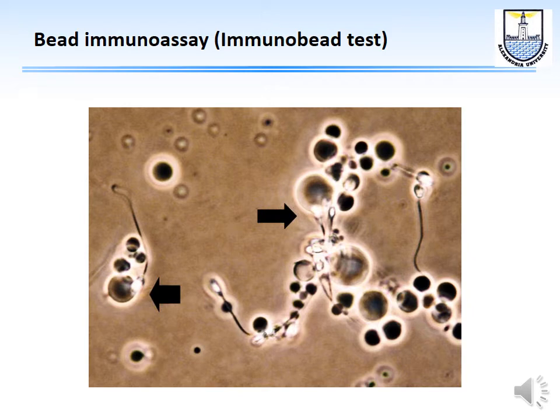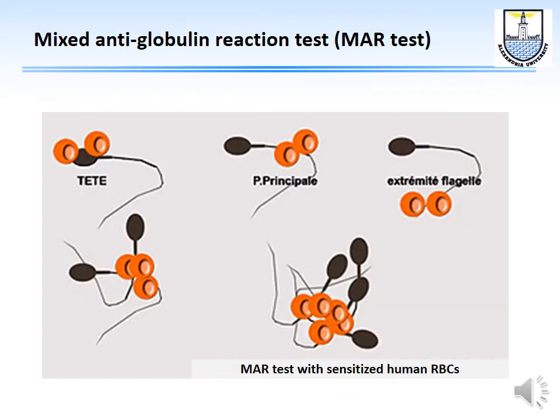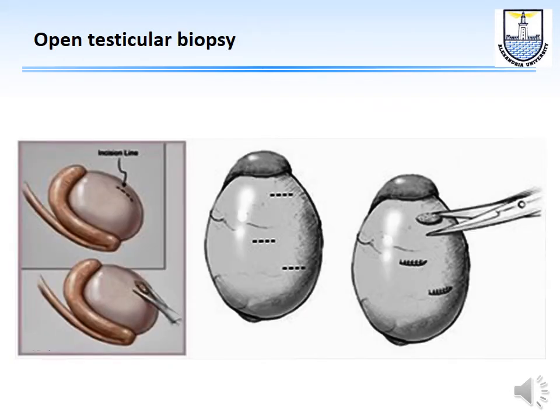Some men have sperm antibodies in their own seminal plasma. These antibodies cause sperm agglutination and prevent fertilization. The immunobead test — where beads coated with antibodies stick to sperm — indicates a positive immunological problem. Another test uses sensitized human red blood cells instead of beads for the same purpose.